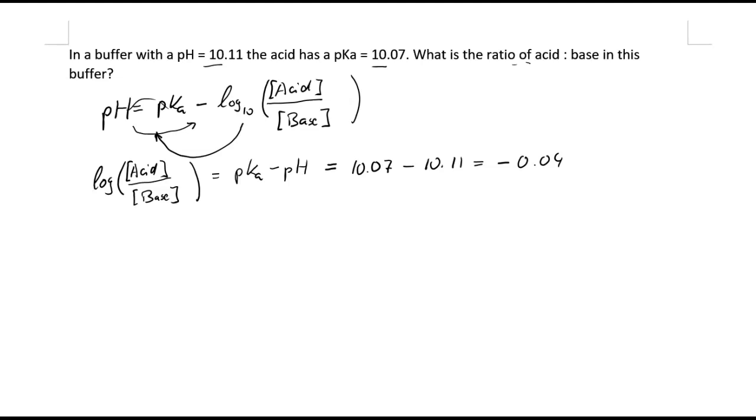And what we can do in order to get rid of this log to the base of 10, we take both sides of this equation 10 to the power of. So we have 10 to the power of log acid over base concentration equals 10 to the power of negative 0.04.